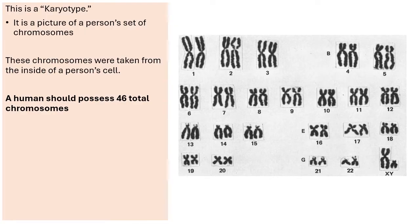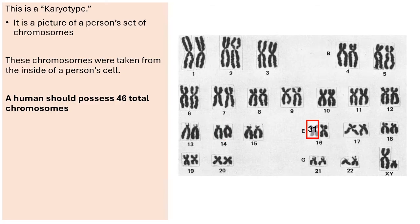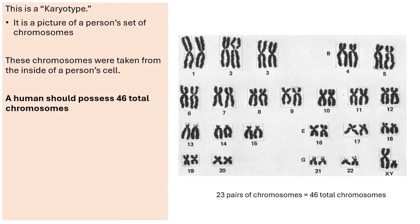A human should possess 46 total chromosomes. There's a faster way to figure that out: if you notice, there are 23 pairs of chromosomes, and pairs always come in two. So 23 pairs is the same as 46 total chromosomes.